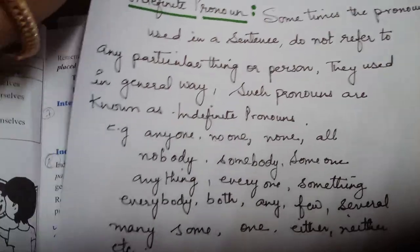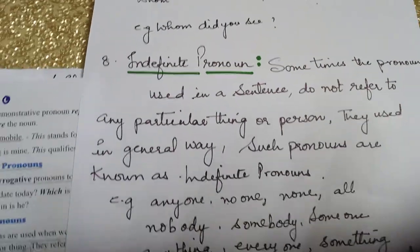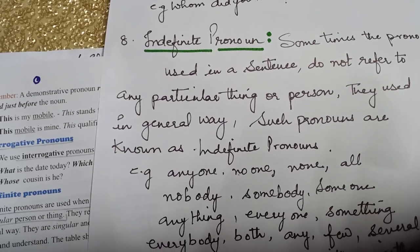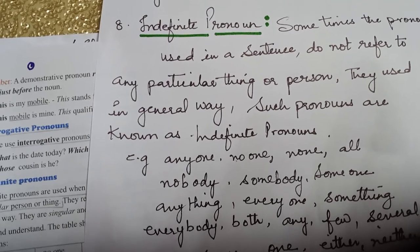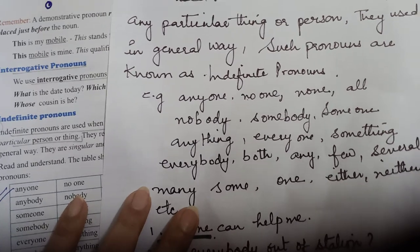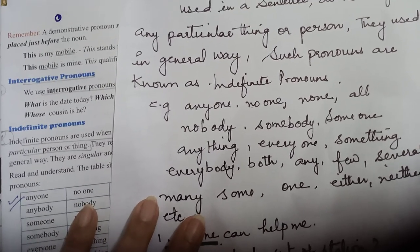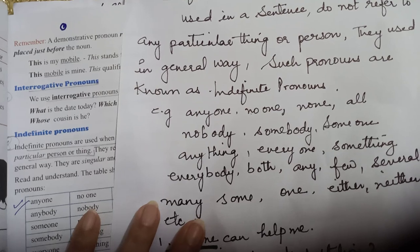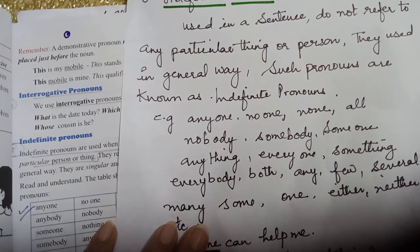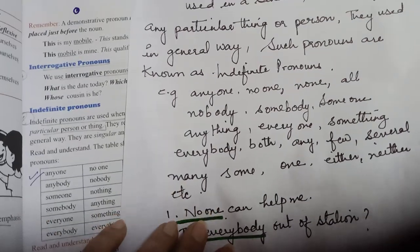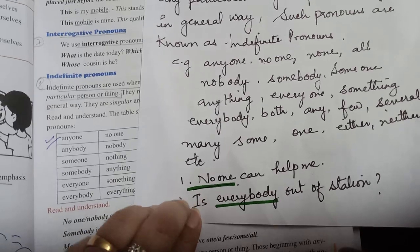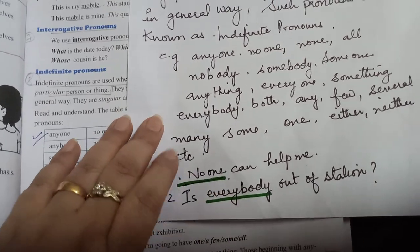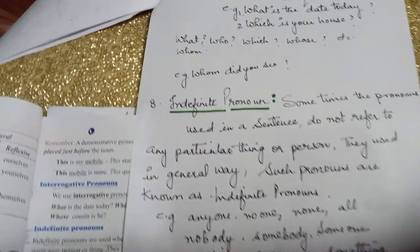Indefinite pronouns — sometimes the pronouns used in a sentence do not refer to any particular thing or person; they are used in a general way. Such pronouns are known as indefinite pronouns. For example: no one, none, all, nobody, somebody, someone, anything, everyone, something, everybody, both, any, few, several, many, some, one, either, neither, etc. Examples: 'No one can help me. Is everybody out of station?'